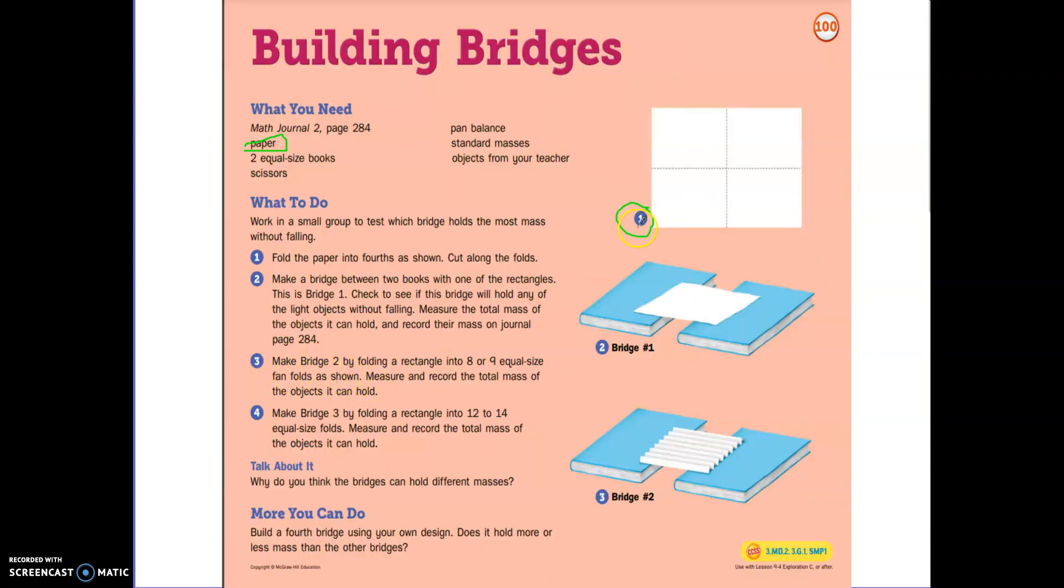Then you're going to make bridge two by taking a different rectangle and folding it into eight or nine equal fan pieces. Fold it back and forth, back and forth. Measure and record the total mass of the objects that that one can hold. Then you're going to make bridge three by folding a rectangle into 12 or 14 equal size folds. So bridge two is going to have eight or nine, bridge three is going to have 12 to 14. Basically, you're going to see and think about what bridges can hold different masses and why they can hold those different masses.